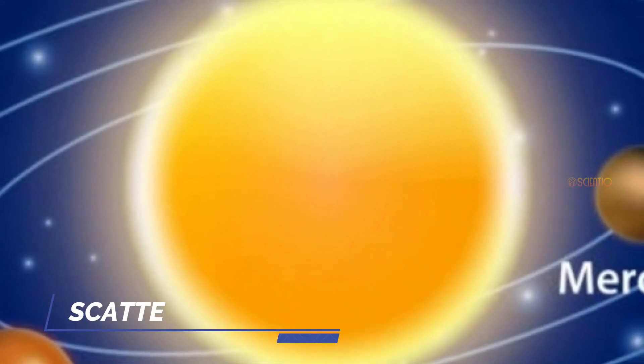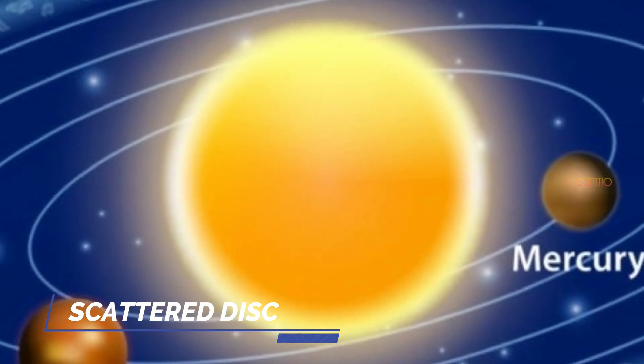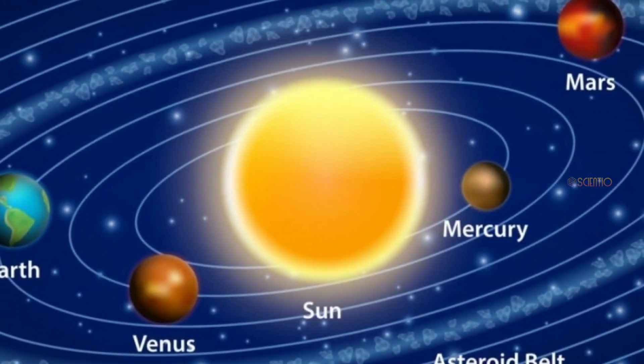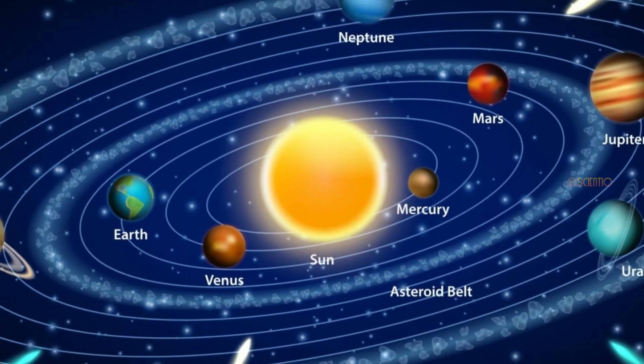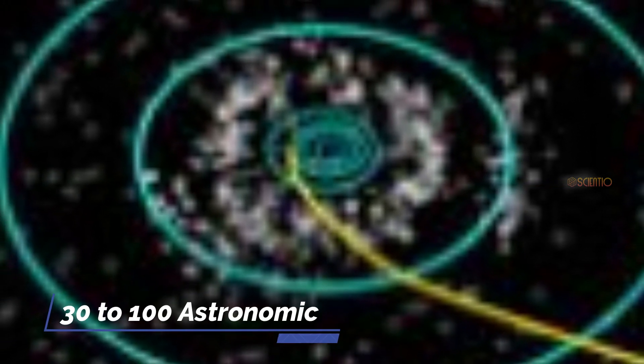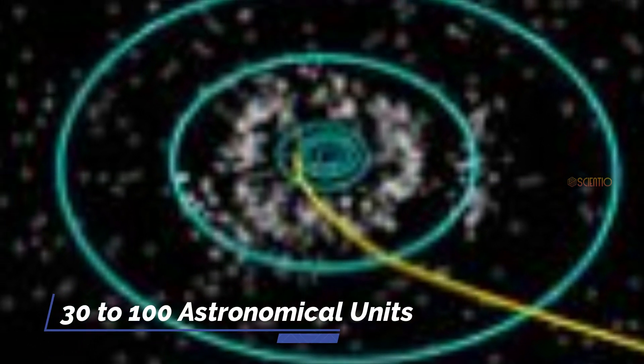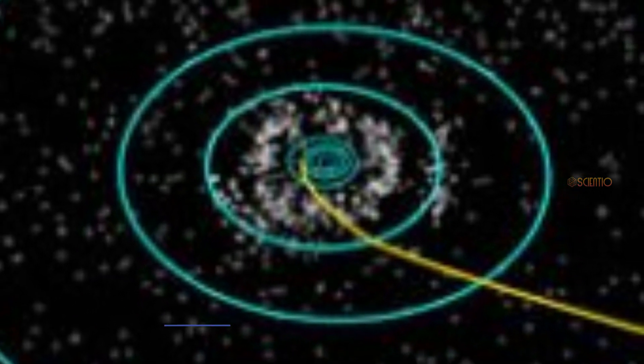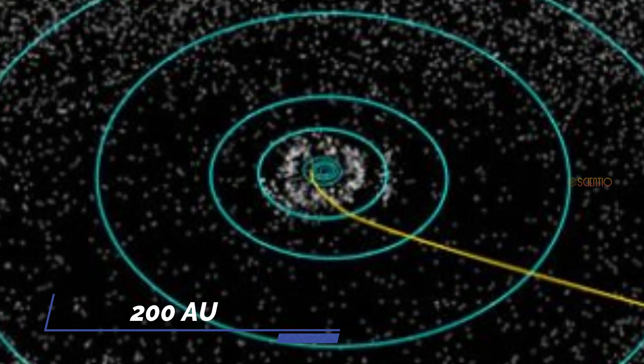Once we have traversed the Kuiper belt, we would head into the vast region of space known as the Scattered Disc, which contains countless comets and other icy bodies that were ejected from the solar system's early history. The Scattered Disc extends from about 30 to 100 astronomical units from the sun, with some scattered objects reaching up to 200 astronomical units.